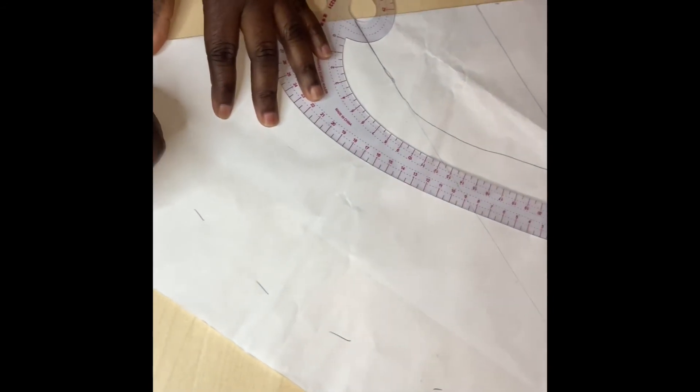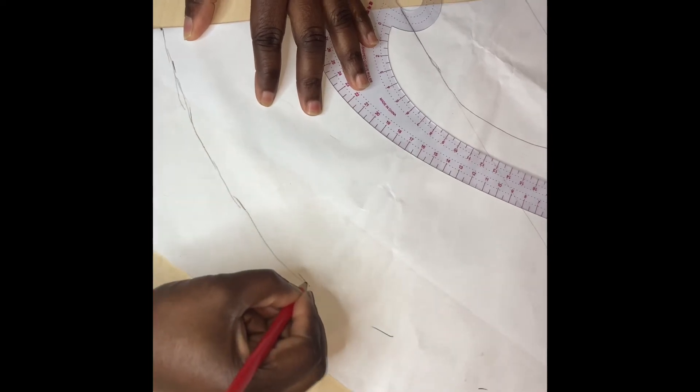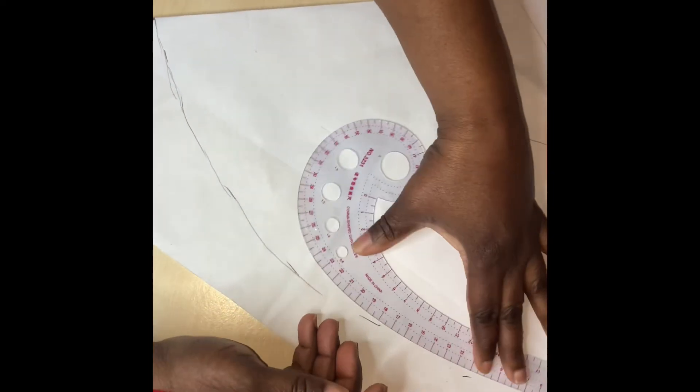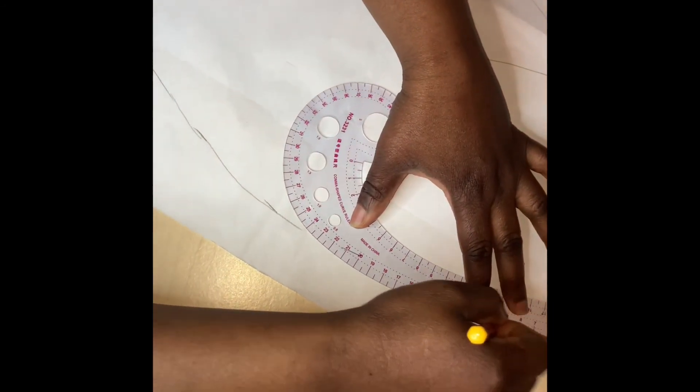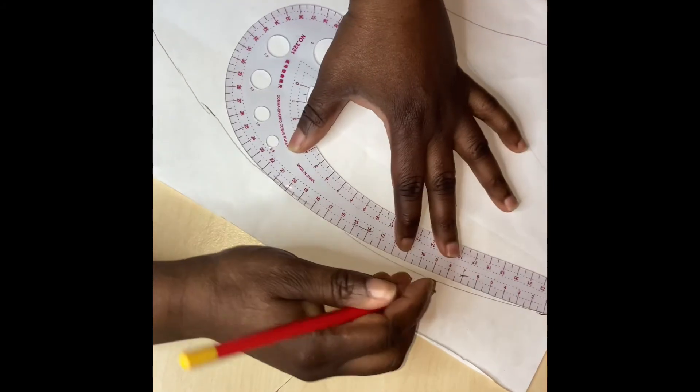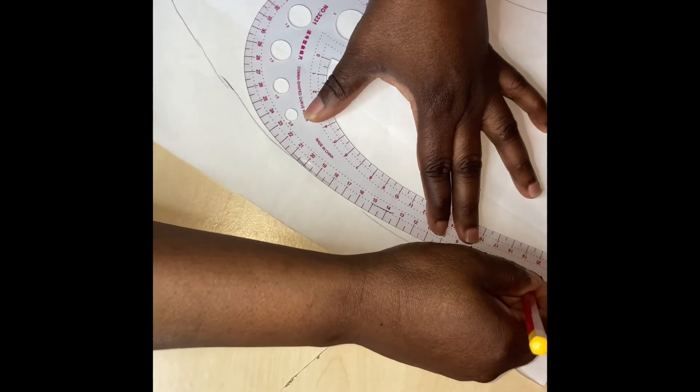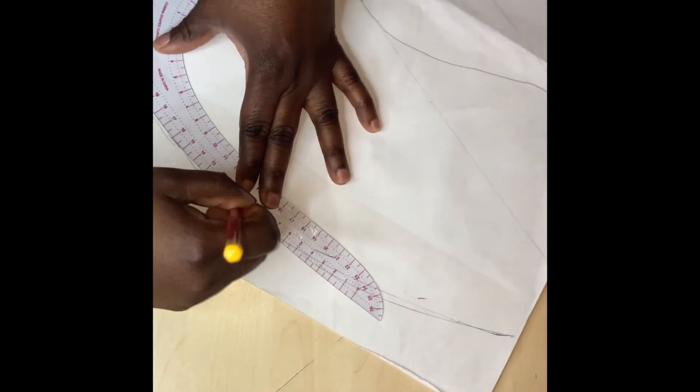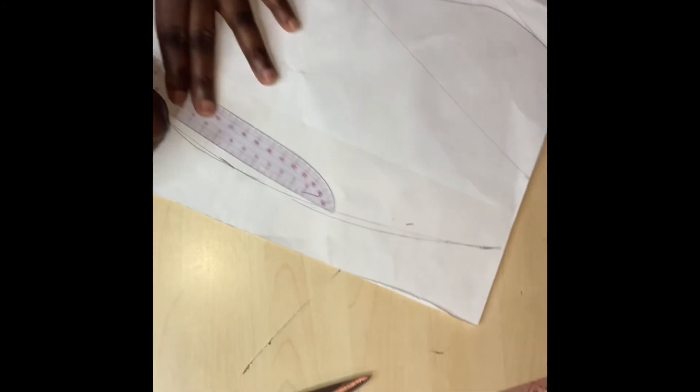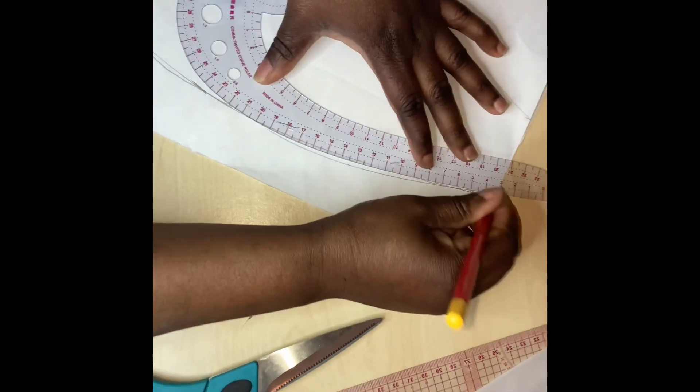Now we are going to connect all this together. You can use your curve line if you want to. Just connect it together. Give the lines a light curve.